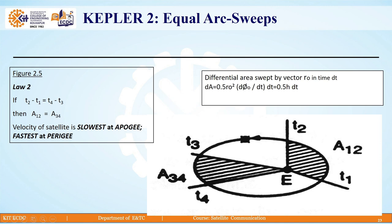In this case, the velocity of satellite is slowest at the apogee point and it is fastest at the perigee point.